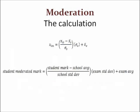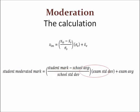Here is the calculation. The main steps in determining a student's moderated mark are: first, determine how far away the student's school mark is from the school class average; then express that in terms of the number of standard deviations of the school class mark; multiply that result by the exam's standard deviation; then add that to the exam average — and that gives you the student's moderated school mark.